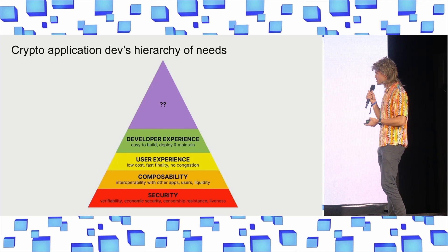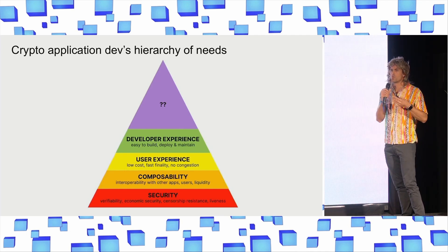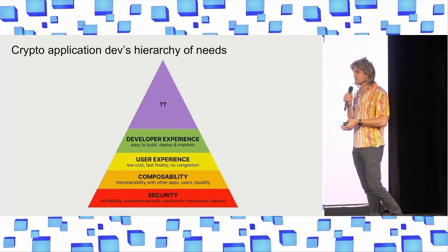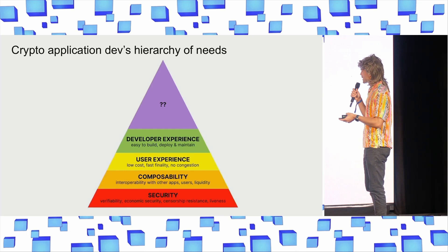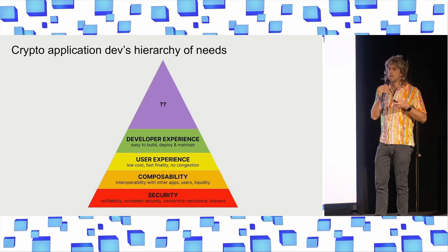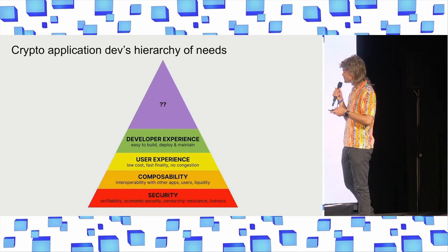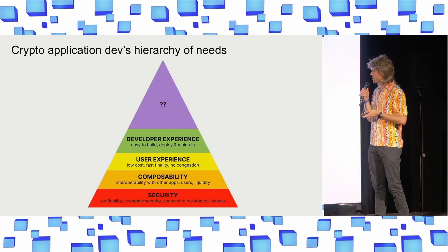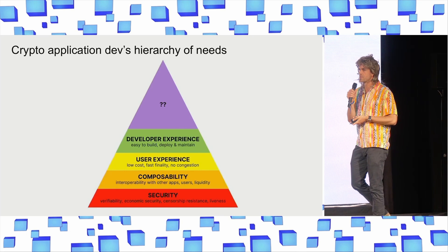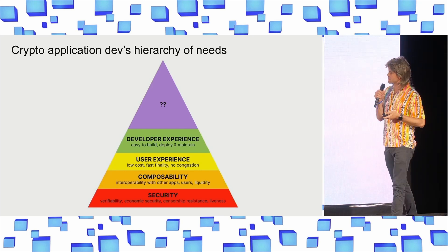Next up, you have composability, and this is about distribution and interoperability. You don't want to build your application in a vacuum. You want to easily onboard new users and liquidity, and you want to interoperate with other applications people have built. You also have user experience — depending on the infrastructure, it can either be slower or faster, or costly or cheaper, and that impacts the user experience of your application. And finally is developer experience — developers are really lazy, and they want it to be very easy to build and deploy and maintain their application.